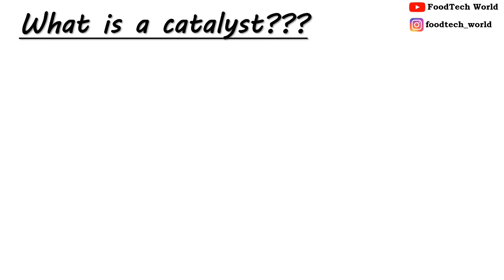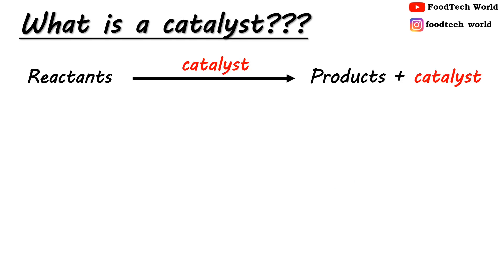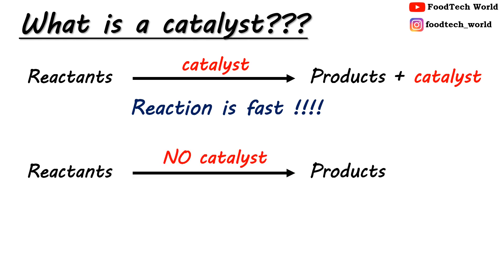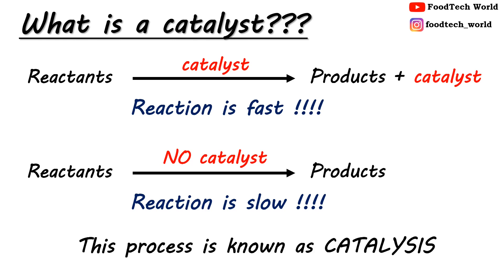Now what do you mean by a catalyst? A catalyst is a substance that can be added to a reaction to increase the reaction rate without getting consumed in the process. This means catalyst speeds up the metabolic reactions taking place in the living system without undergoing any alteration in them. The process through which reaction rate is increased by adding a catalyst is known as catalysis.